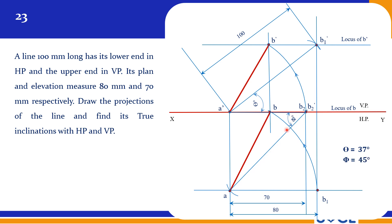Measure both and write as the answer. I am getting theta equal to 37 degrees and phi equal to 45 degrees. This is the kind of problem where one end is in HP and another end is in VP. You can also proceed in three different steps, but this rotating line method gives a simpler and faster solution. We will see a few more problems, including midpoint problems. Thank you.